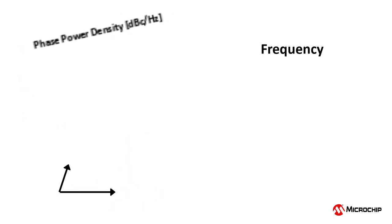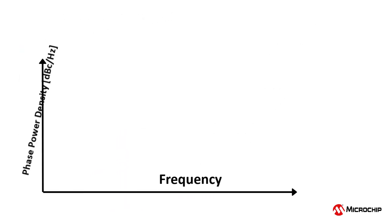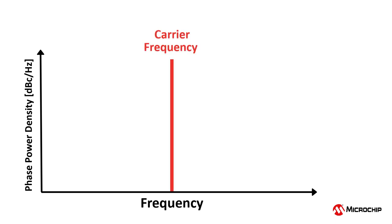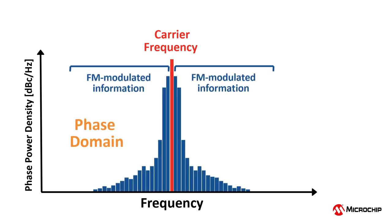The term carrier comes from the idea of a certain average carrier frequency of a clock signal that is modulated — for example, in FM radio to transmit information.